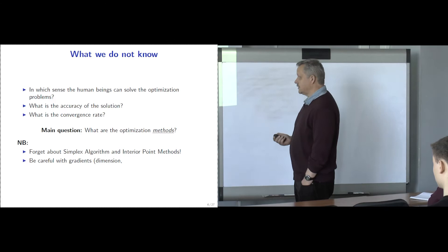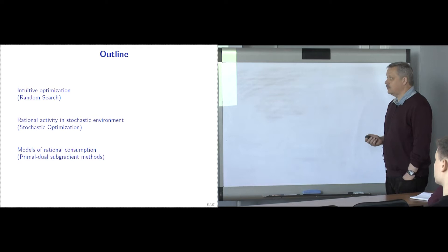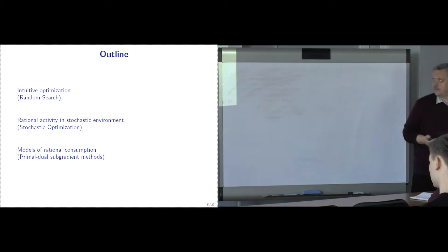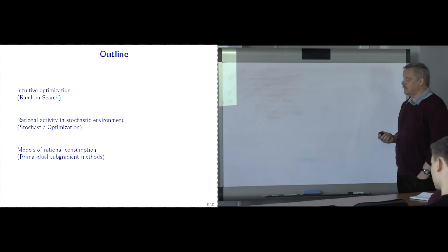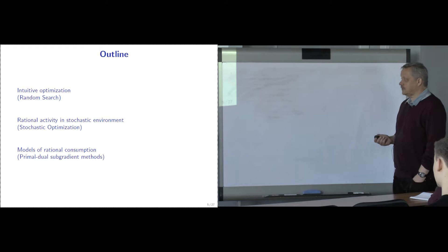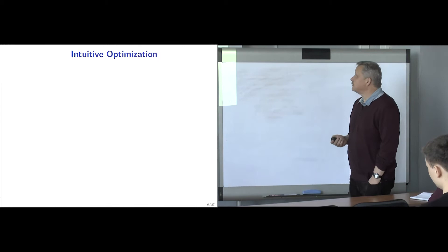Today, we will look at three different directions which support the rationality of a human being by some optimization theory. Intuitive optimization will be supported by the random search algorithm. Rational activity in a stochastic environment will be supported by stochastic optimization, and rational consumption by primal views of the gradient. This is our plan, and hopefully we will be able to cover all of it.